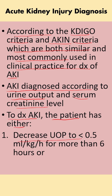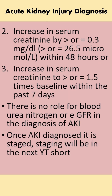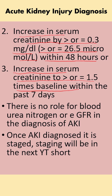To diagnose AKI, the patient has either a decreased urine output to less than 0.5 mL/kg/hr for more than six hours, or an increase in serum creatinine by more than or equal to 0.3 mg/dL within 48 hours, or an increase in serum creatinine to more than or equal to 1.5 times the baseline within the past seven days. If the patient meets any one of those criteria, they are diagnosed as having acute kidney injury.